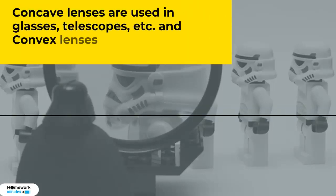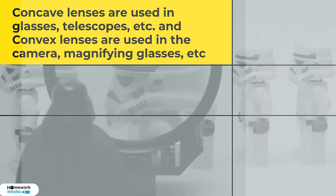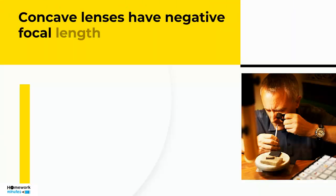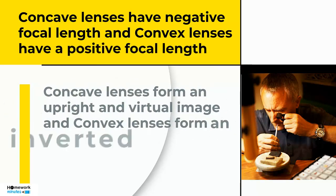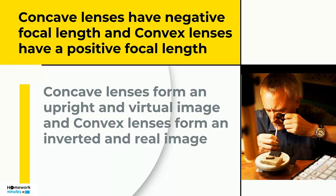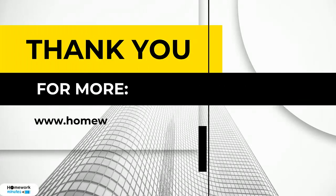Concave lenses are used in glasses, telescopes, etc., and convex lenses are used in cameras, magnifying glasses, etc. Concave lenses have a negative focal length and convex lenses have a positive focal length. Concave lenses form an upright virtual image and convex lenses form an inverted real image. Thank you. For more, visit our site www.homeworkminutes.com.